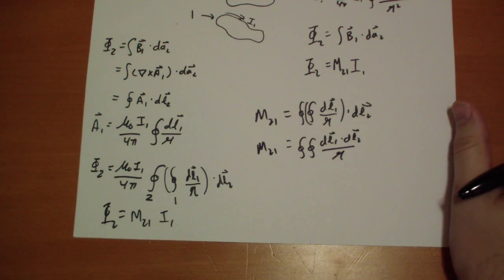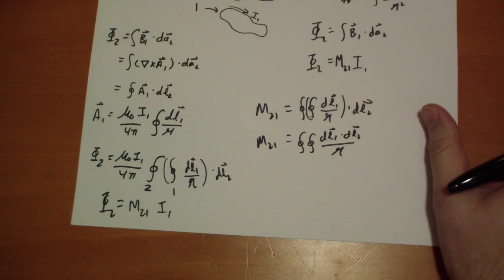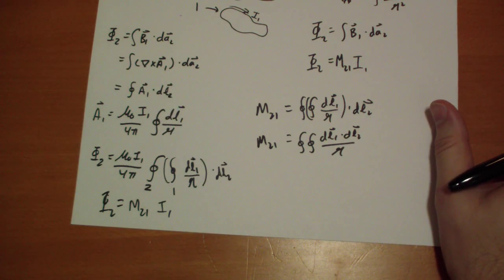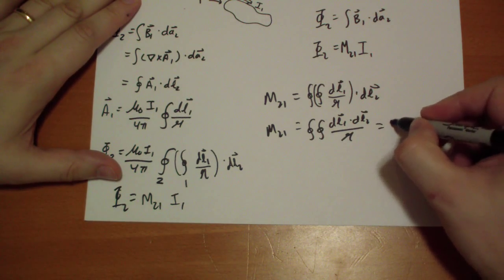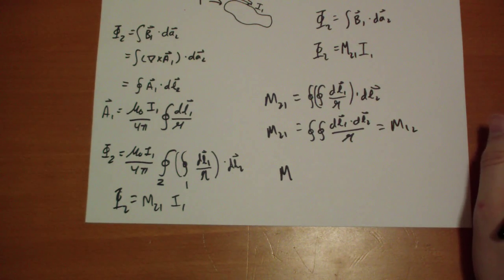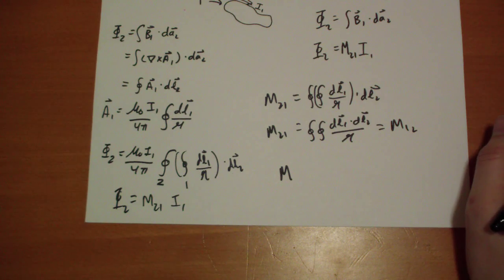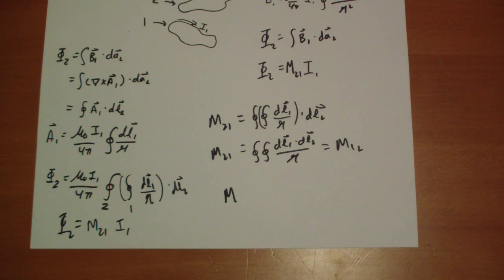But the interesting thing is, what happens if you switch? If you say, okay, what if I run a current through here, and what's the flux through there? And the answer is, well, the dot product doesn't care about the order. And you can turn these integrals inside and out, and so you find out that this is actually equal to M12. And so really, you only need a single constant M that will relate the current of one loop and the magnetic flux through the other. Very fascinating.